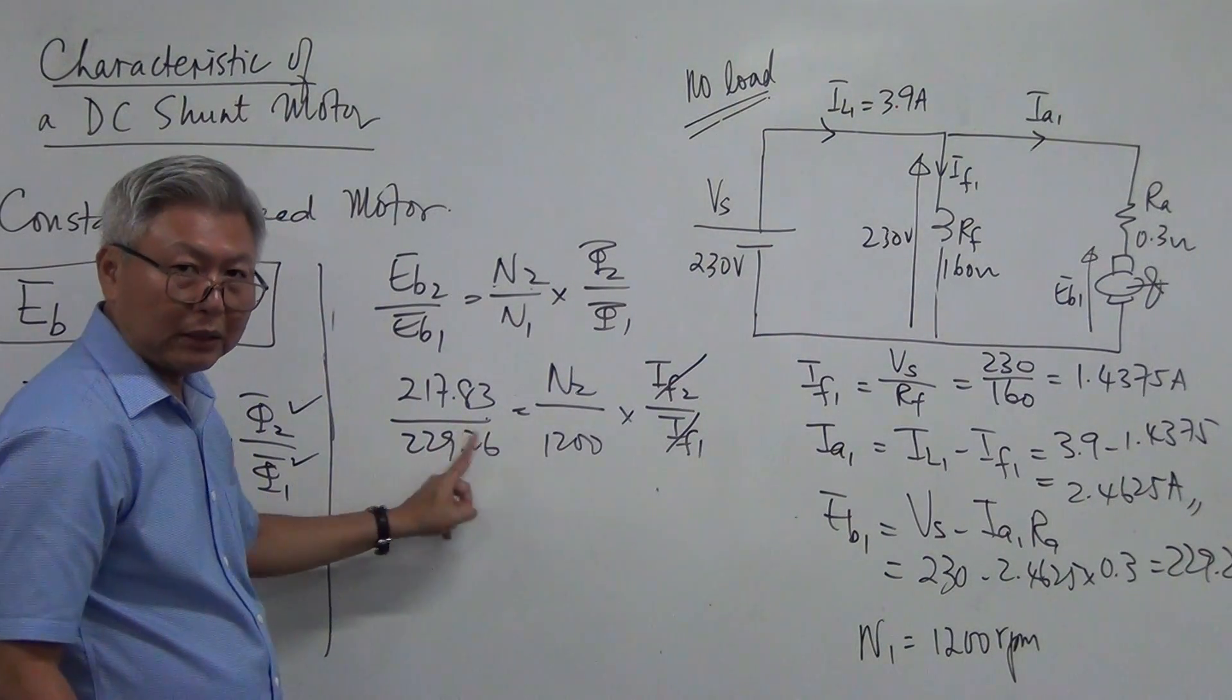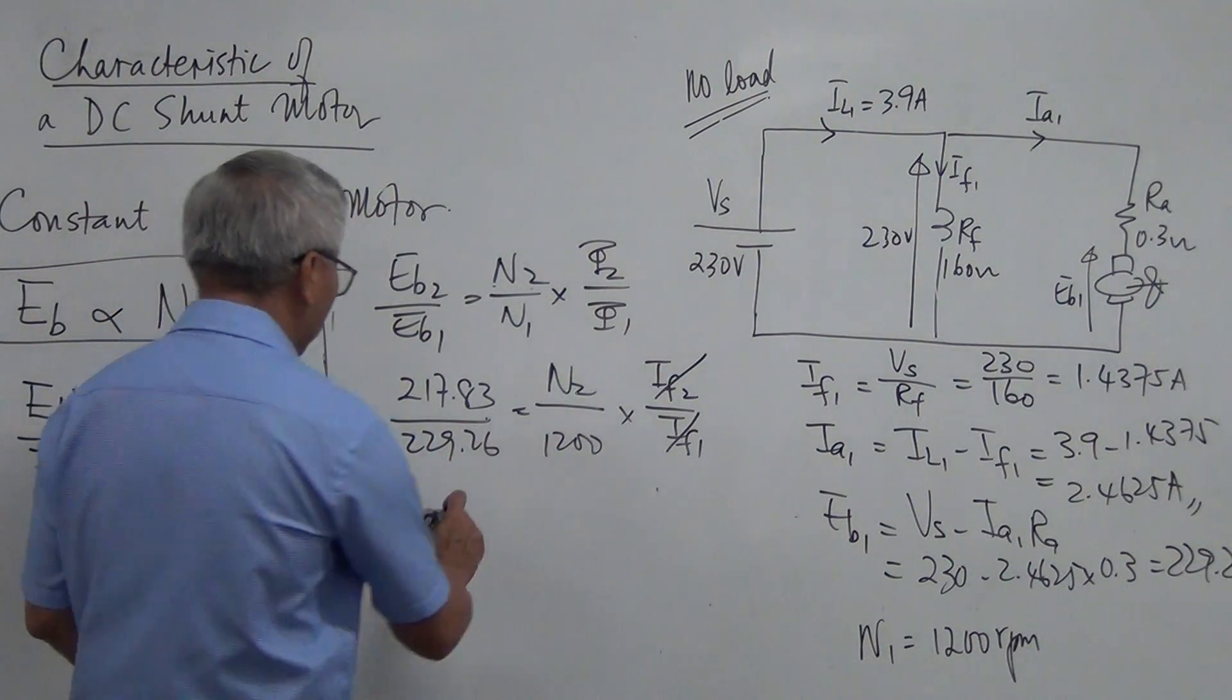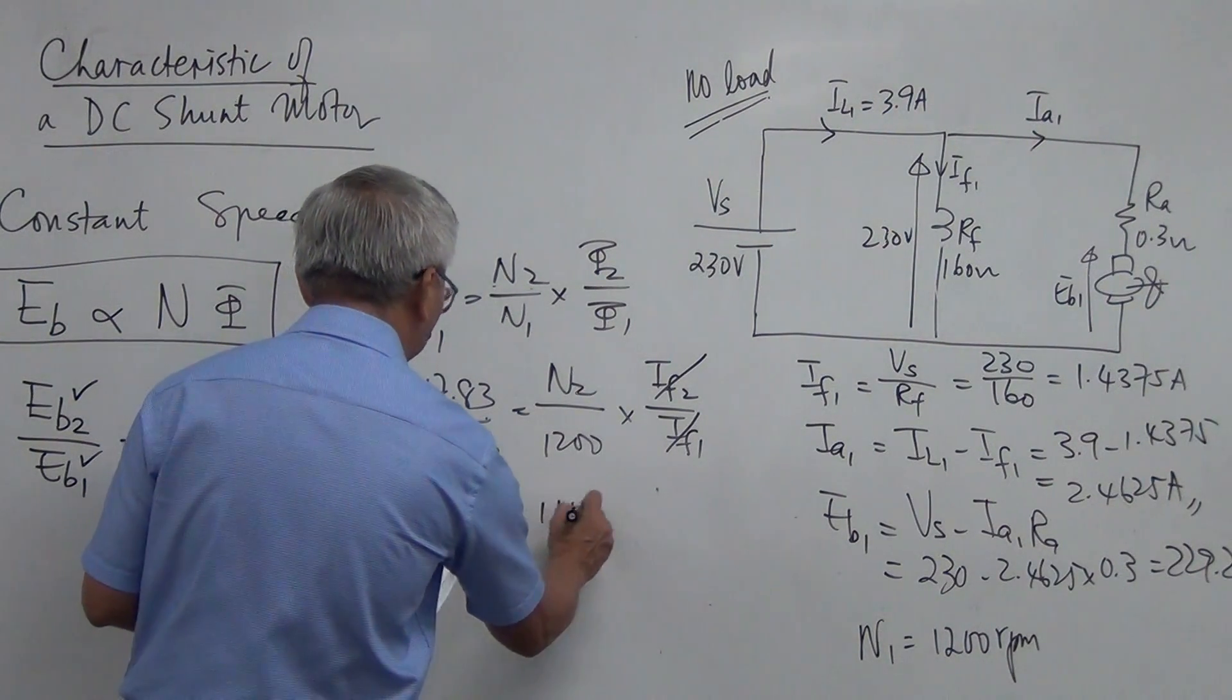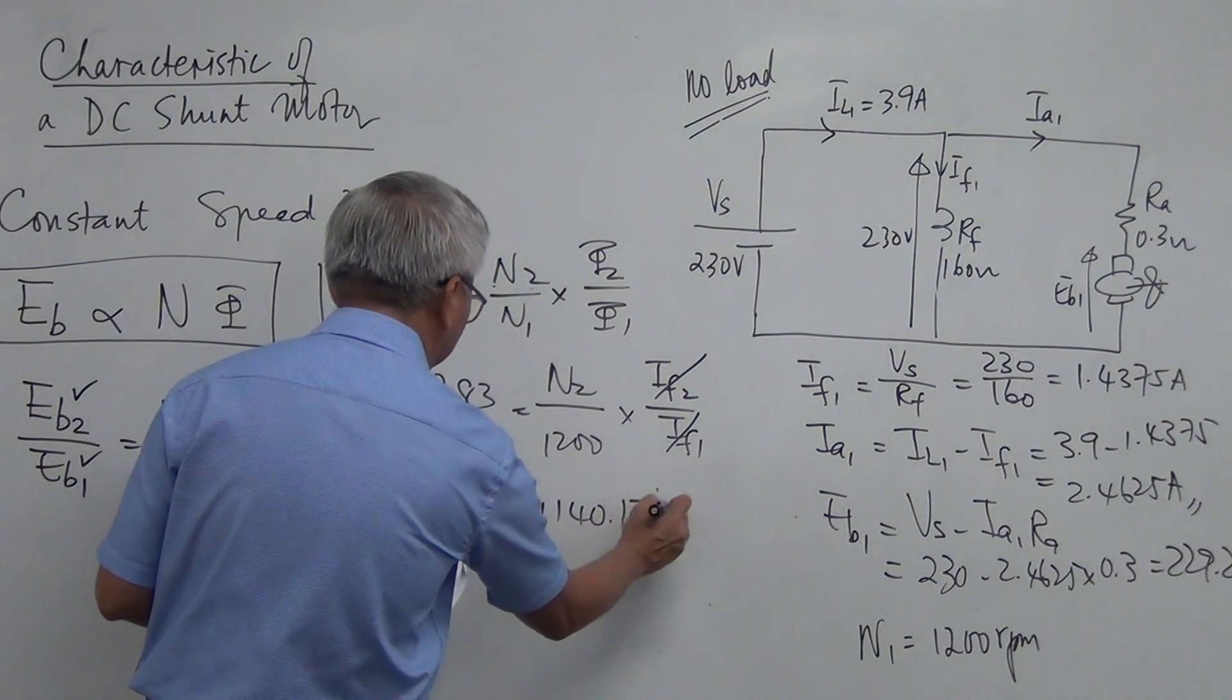So now that I come back to here, in this equation here. If I solve my N2, N2 is equal to 1140.17 RPM.